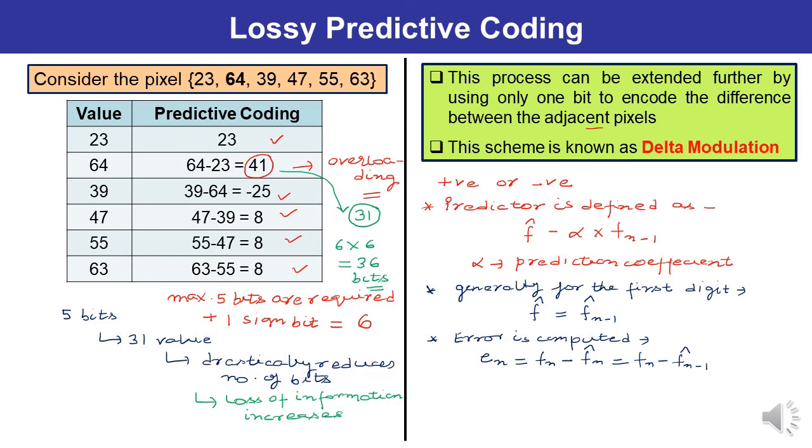And the error is quantized as en, which is plus psi for all values of en greater than 0, and this is minus psi otherwise. Here, psi is the positive quantity.